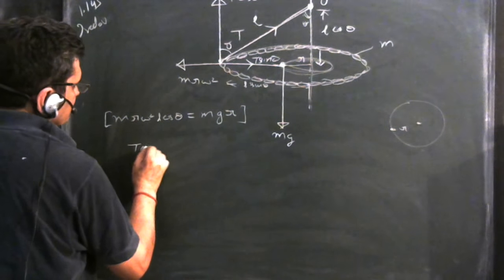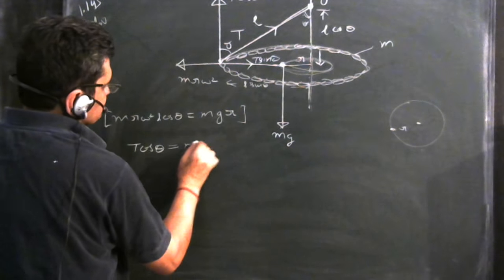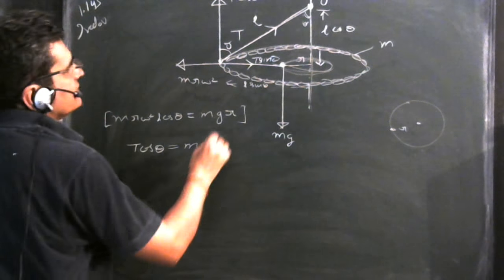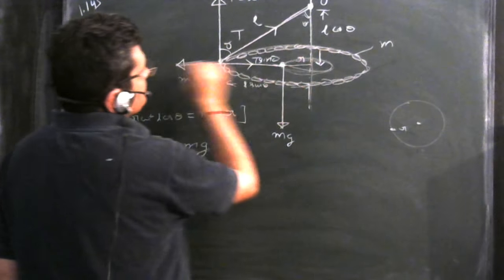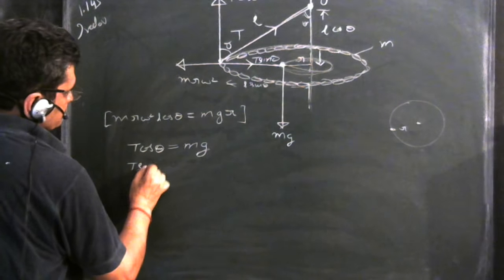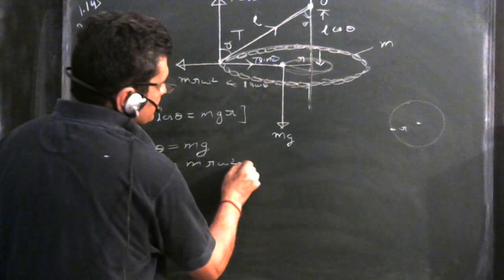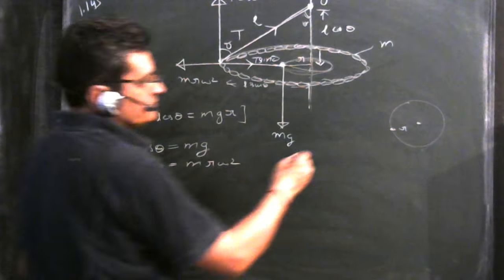So T cos theta equals Mg. And equate the horizontal forces. What are the horizontal forces? T sin theta equals MR omega square. To divide these two...